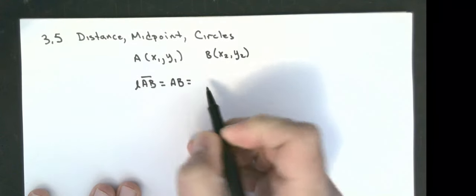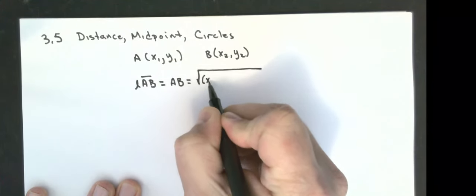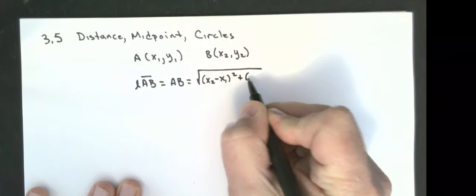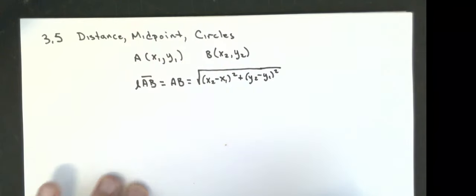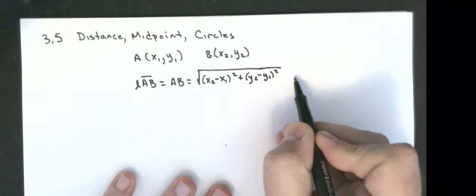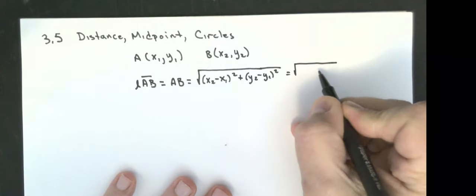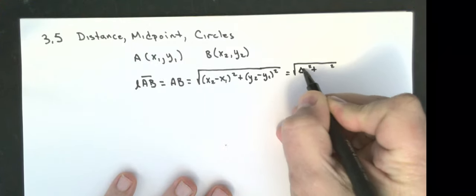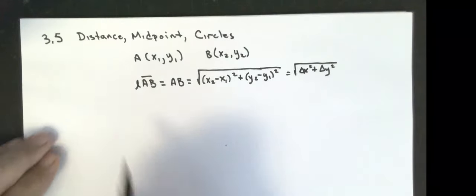It is the square root of x2 minus x1 quantity squared plus y2 minus y1 quantity squared. And if I had a z-coordinate, if I was in three dimensions, I would add a plus z2 minus z1 quantity squared. The way I remember it, it is the square root of the sums of the squares of the change in x and the change in y. That gives you the distance in between two points. So this is distance.